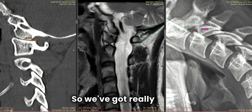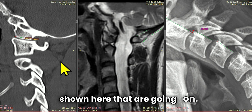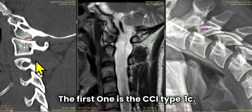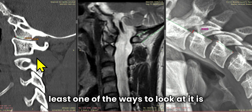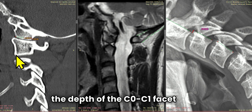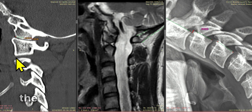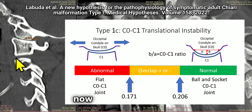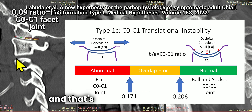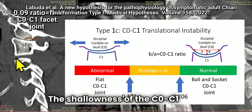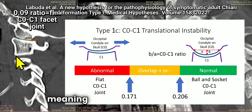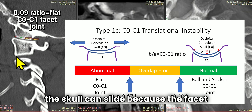We've got really three different things that are shown here that are going on. The first one is the CCI type 1C. And that's really looking at — or at least one of the ways to look at it — is the depth of the C0C1 facet joint. You're going to see the research paper on the screen right now that I refer back to. And that's if the patient has Chiari, the shallowness of the C0C1 facet joint predicts symptoms, meaning there's probably a 1C type instability occurring where the skull can slide because the facet joint isn't deep enough.